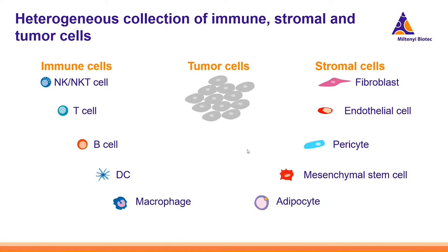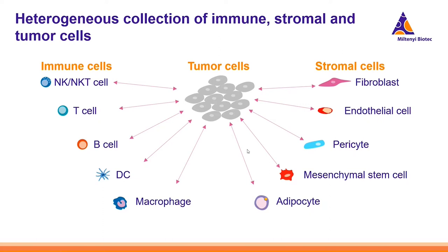Here is an exemplary representation of main subtypes for the different classes. For immune cells, for example: NK cells, NKT cells, T cells, B cells, dendritic cells, and macrophages. For stromal cells: fibroblasts, endothelial cells, pericytes, and so on. There is certainly some interaction going on — they're not just sitting there doing nothing. There's interaction between tumor cells and immune cells, tumor cells and stromal cells, but also in between the healthy cells, with modulation of the functional states of the different cell types.